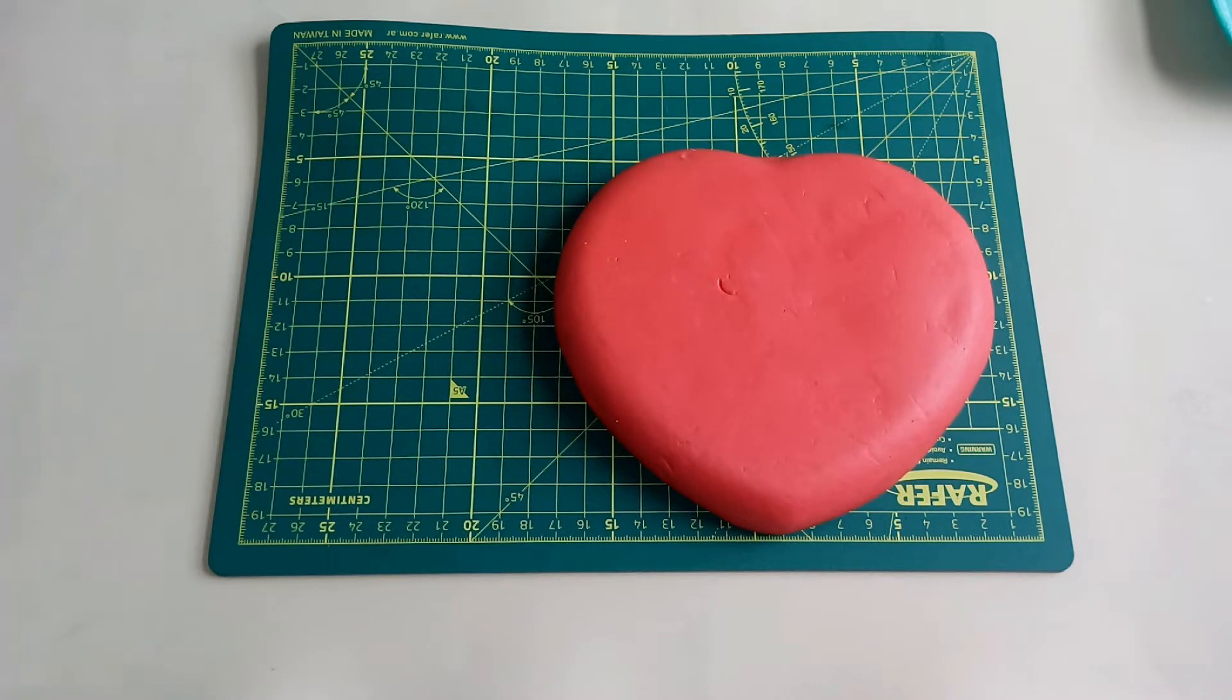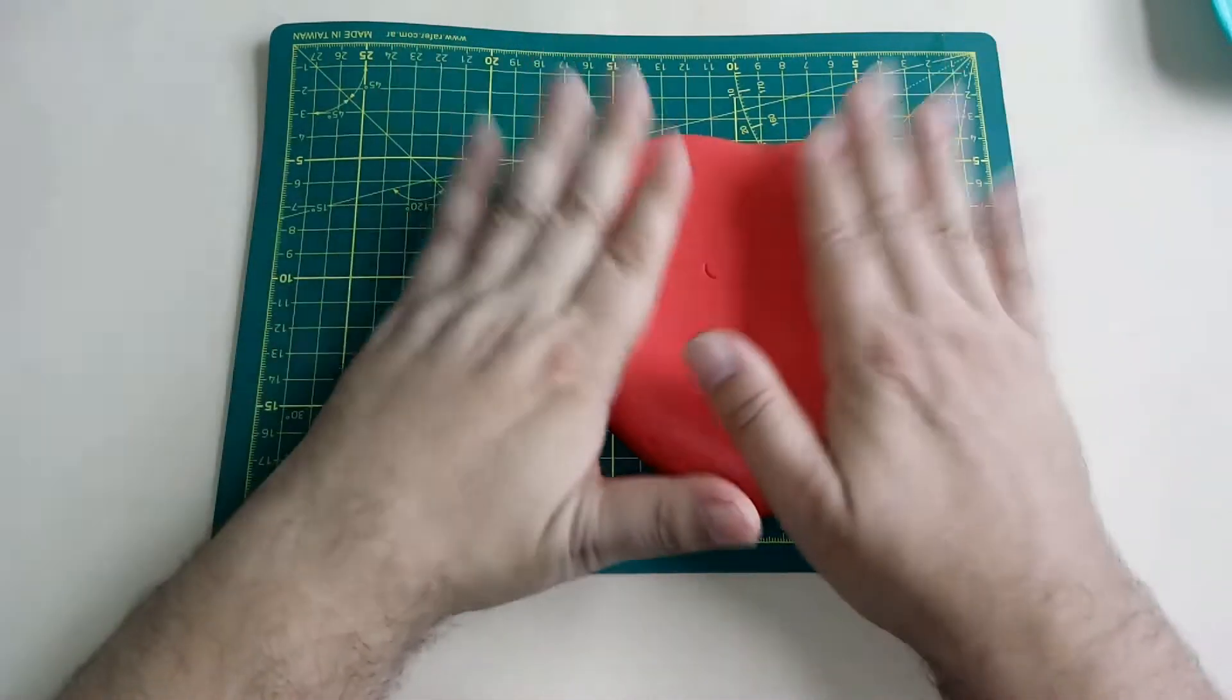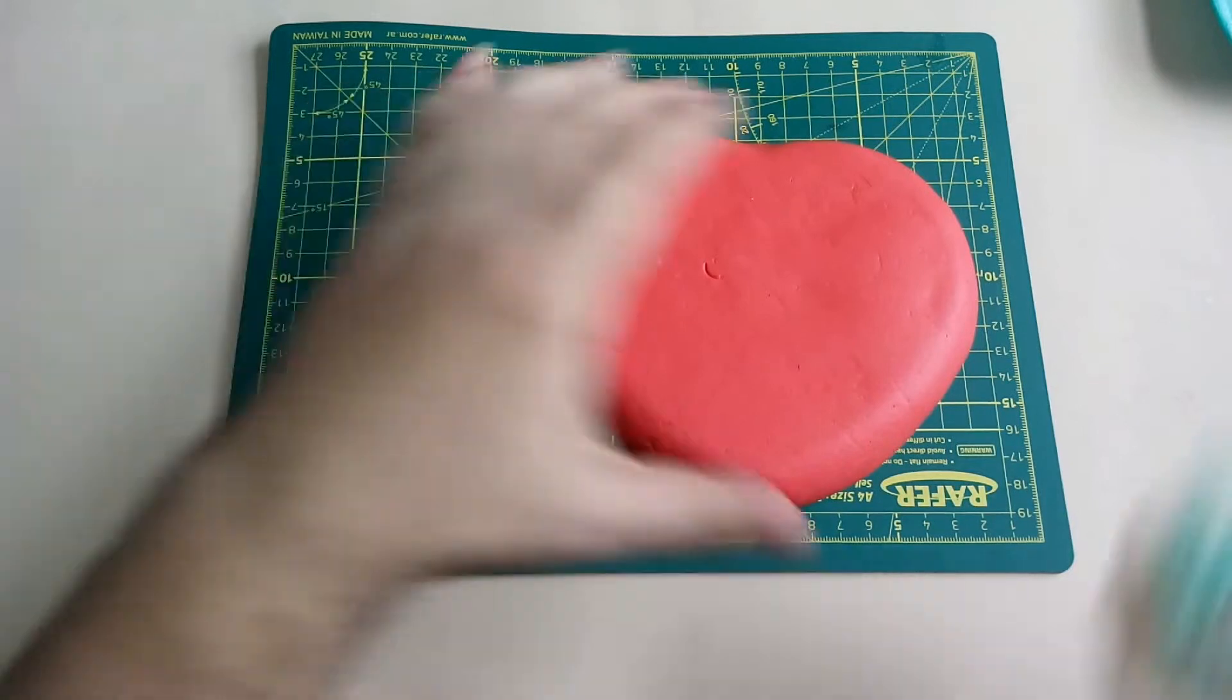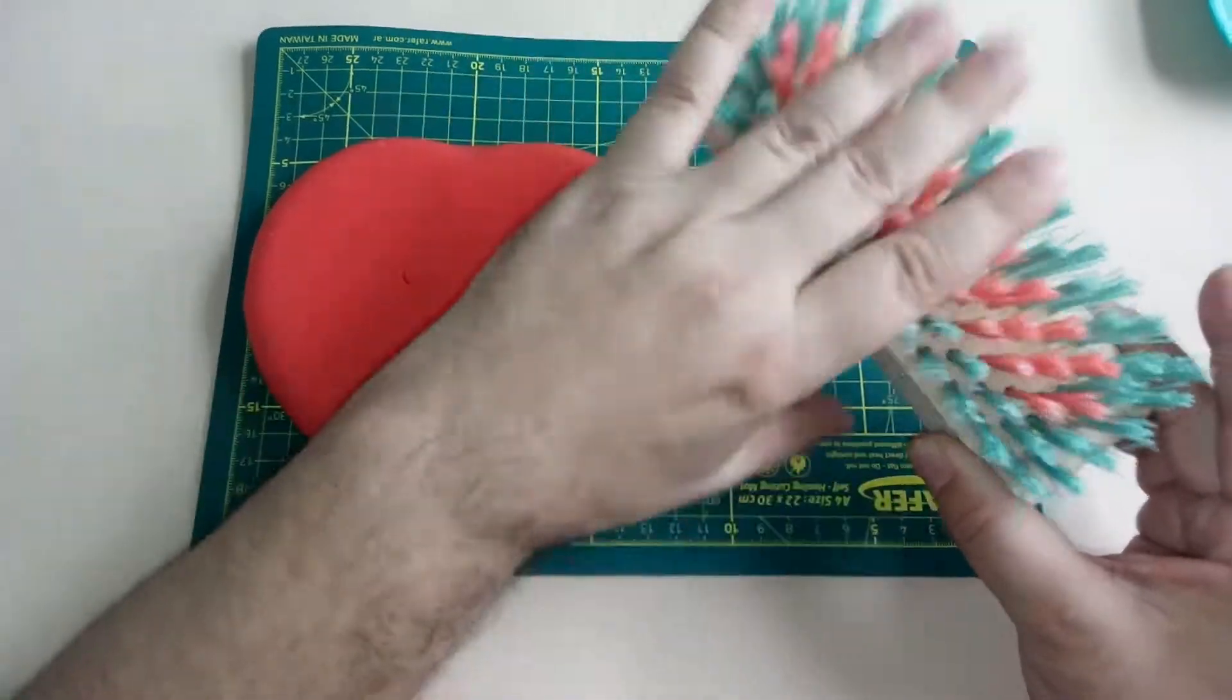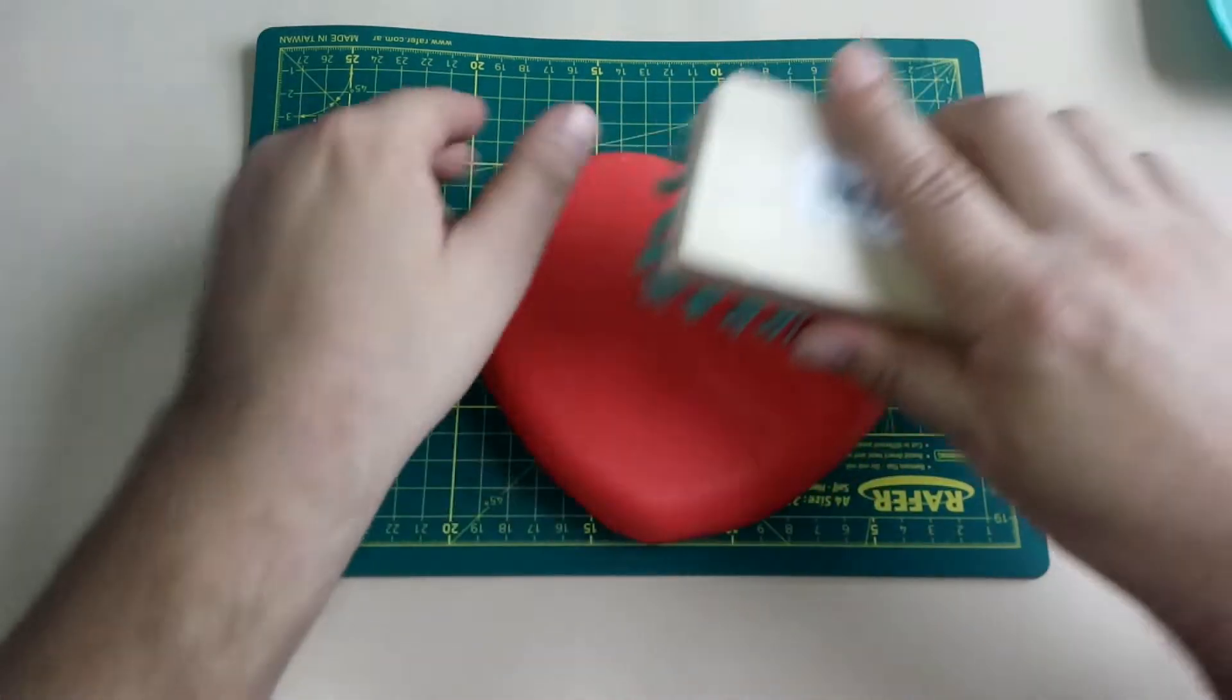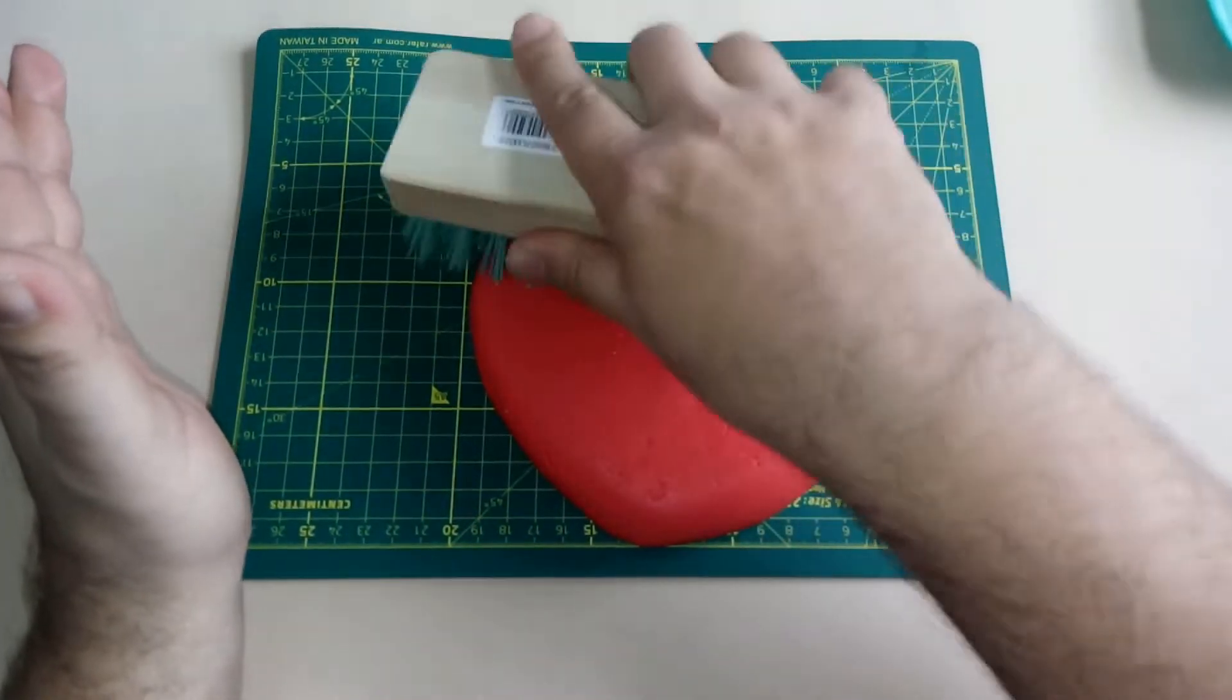Guardamos la masa sobrante para que no se seque. Y voy a darle textura a esto. Para eso voy a usar un cepillo, de los que habitualmente usamos para lavar la ropa, cerdas bien duras. Y voy a comenzar a texturar.